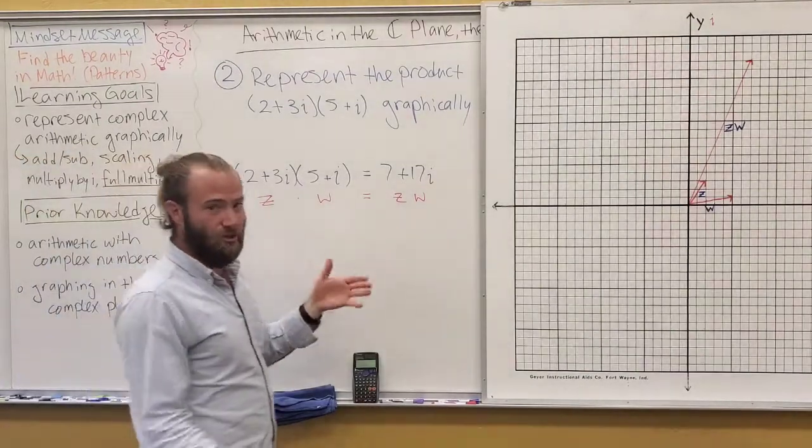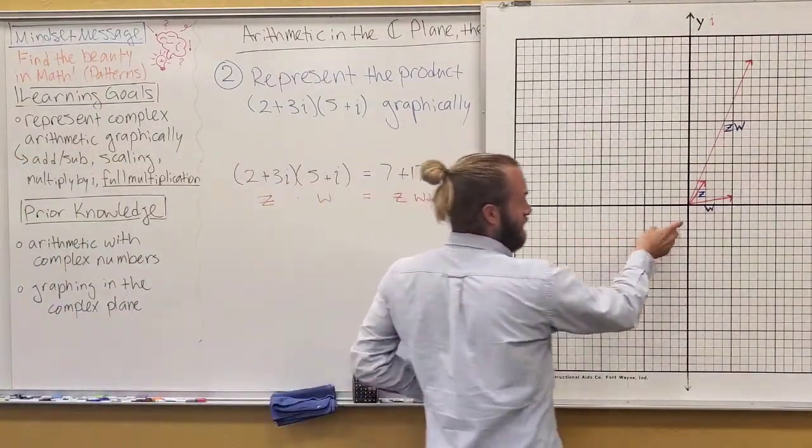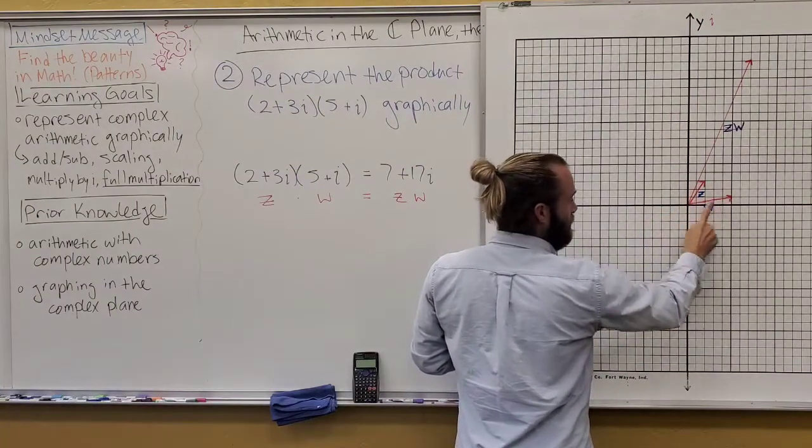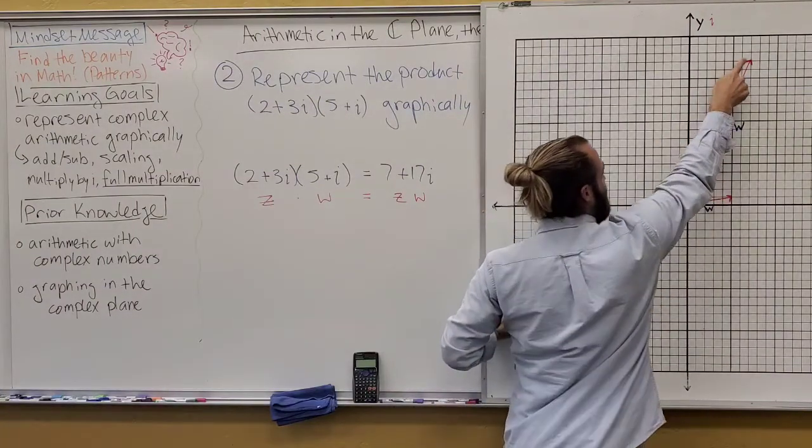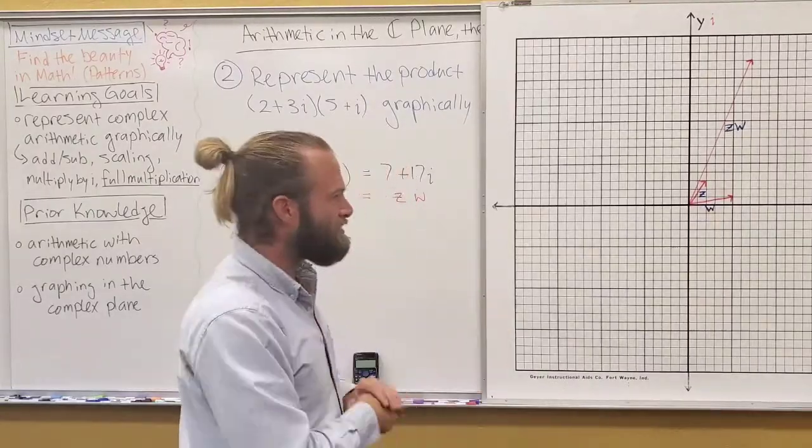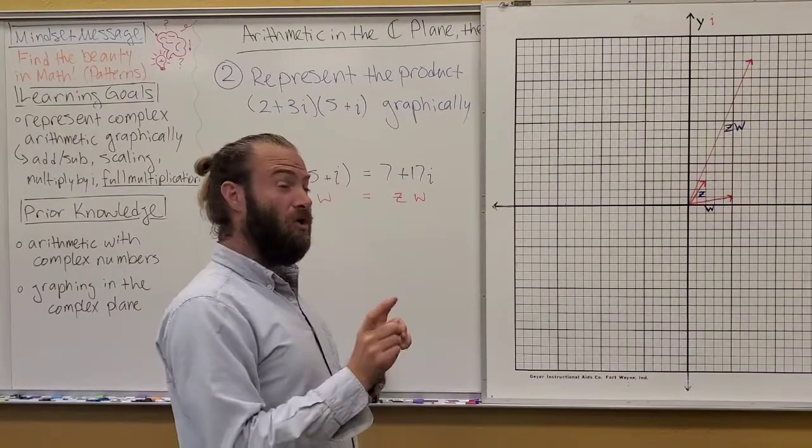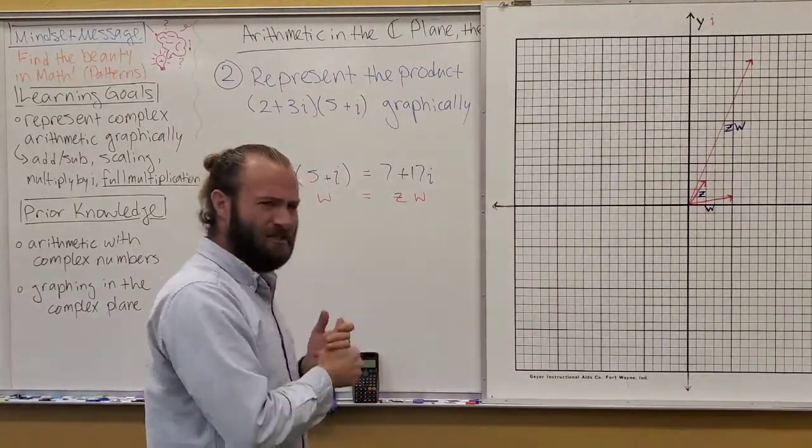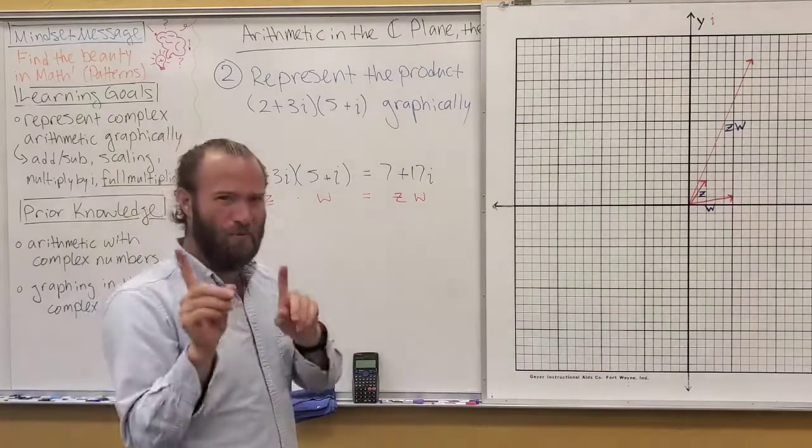Now, if we actually just graphed those in the complex plane, here's my Z and my W, and then ZW is way up here. If you just look at that, there's nothing immediately that sticks out to us that you could think like, oh, I wonder if this is the relationship, right? It's more complex than that, no pun intended.